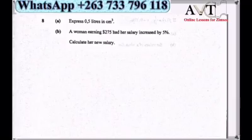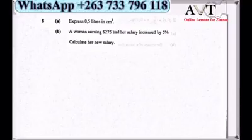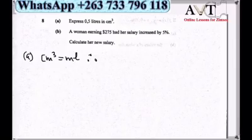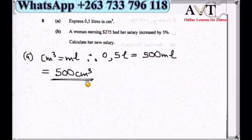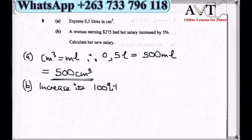Question 8a: Convert 0.5 litres to cubic centimetres. Since cubic centimetres equal millilitres, 0.5 litres = 500 millilitres = 500 cubic centimetres.